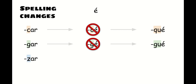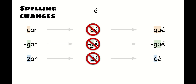Finally, if you're trying to change the spelling of a verb that ends in -zar, when you add the -é, you can't have the 'z' next to the 'e' when conjugating the yo form in the preterite. So we're going to spell it instead with c-e. So -zar changes to -cé, spelled with a c-e.